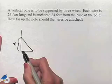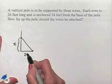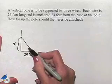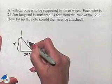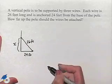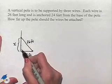We're told that it's 24 feet from the base of the pole, so the 24 feet will be this length, and we know that each wire is 26 feet long. So we really don't have to draw three different wires. We just need one wire to demonstrate the relationship.